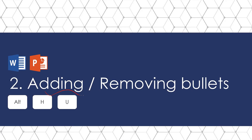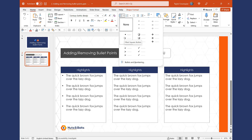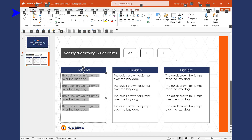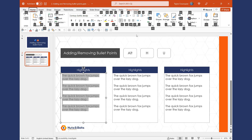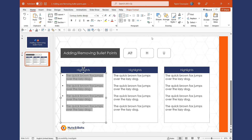Let's look at one of my favorite Ribbon Guide examples: adding and removing bullet points, which works both in Word and PowerPoint — Alt, H, U on your keyboard. Here in PowerPoint, I have some text and I want to add bullet points to it. Normally you'd select the text, come to the Home tab, open the Bullet dropdown, make your selection, and be done. Using our Ribbon Guides, I hit and let go of the Alt key, hit H for Home, and you can see U for bullets. I'll hit U on my keyboard, use my arrow keys to select the square bullets, hit Enter, and I'm done.